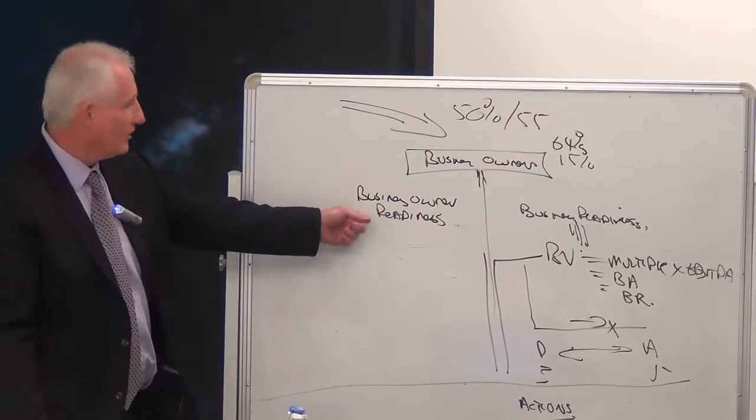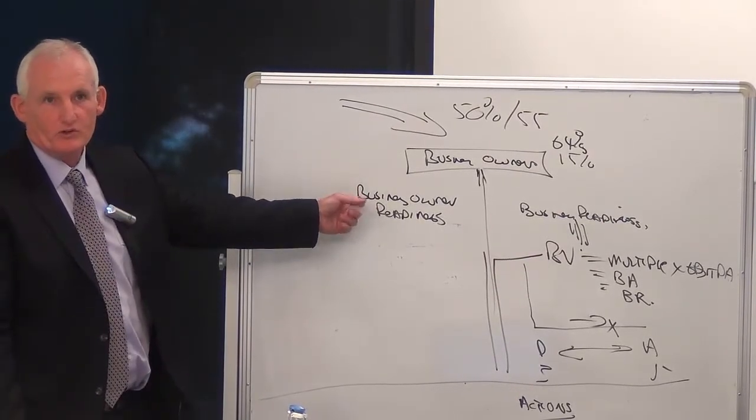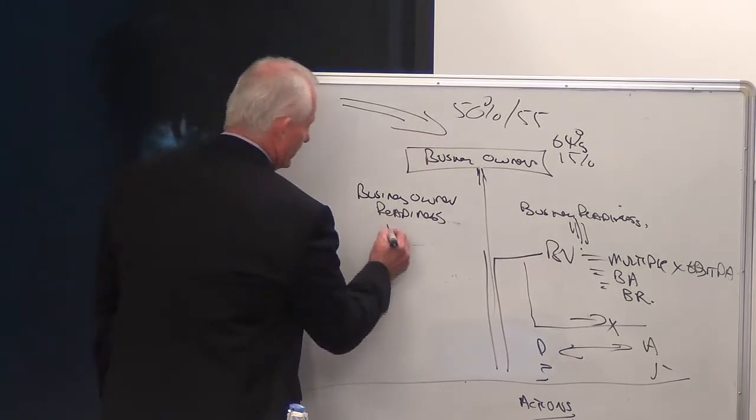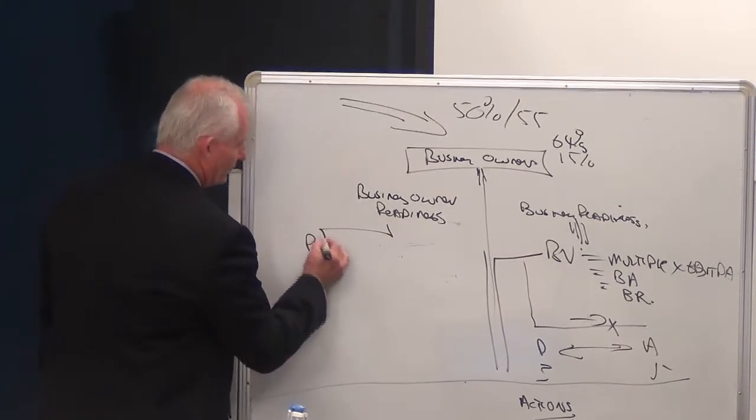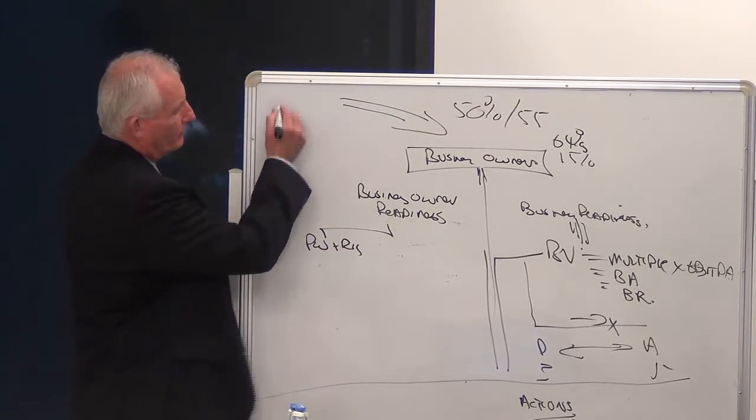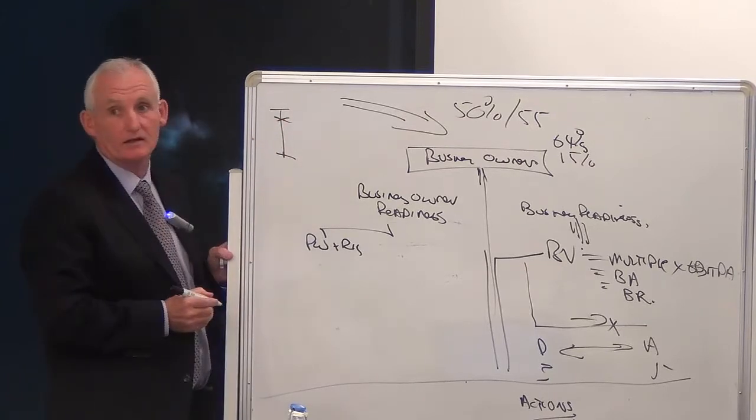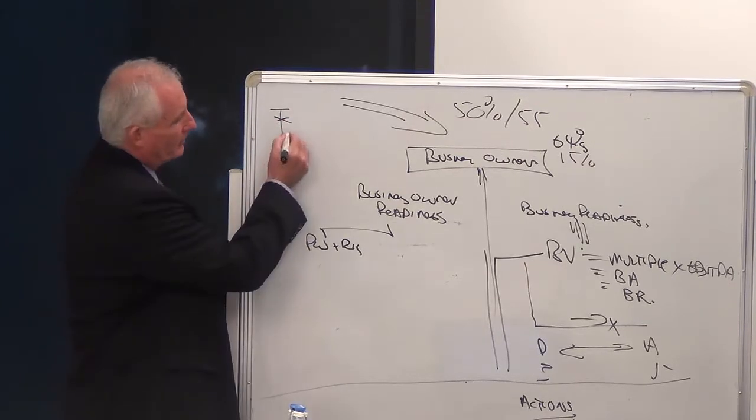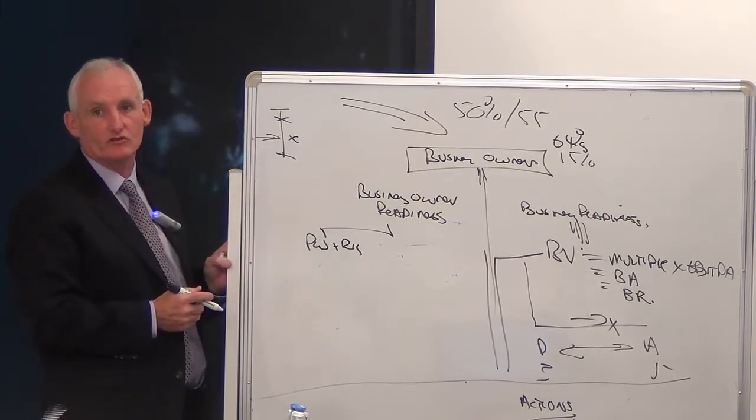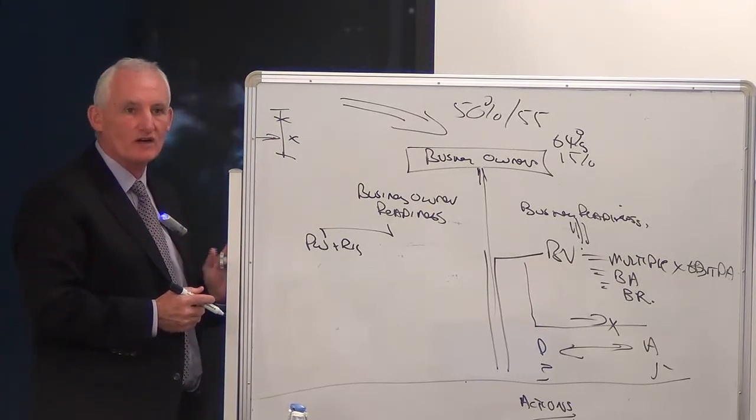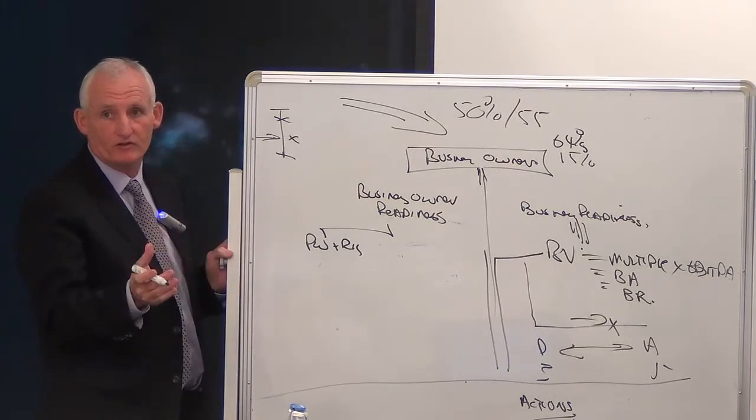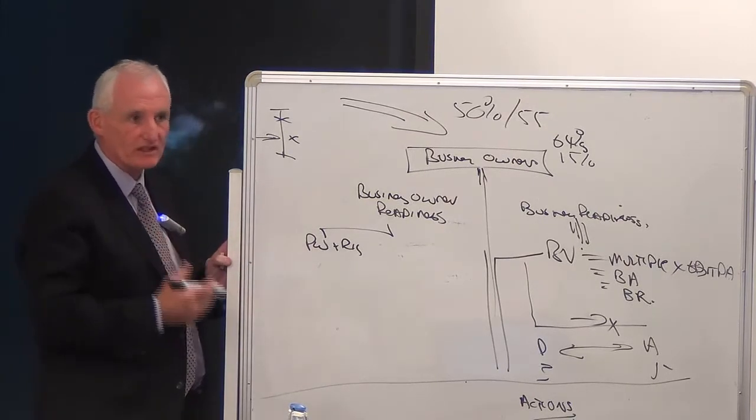We know that there's a business owner readiness. So with the business owner readiness, there are two major areas we're going to look at. One area is personal wealth and risk. What's the point of selling your business right up here if you're going to end up with that much, because you haven't appropriately looked at your tax considerations and your structures along the way?